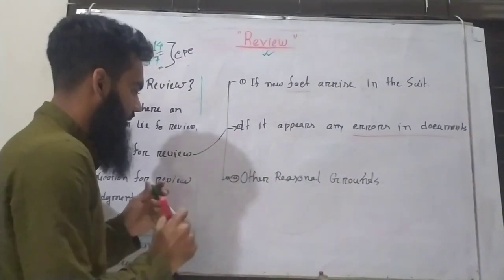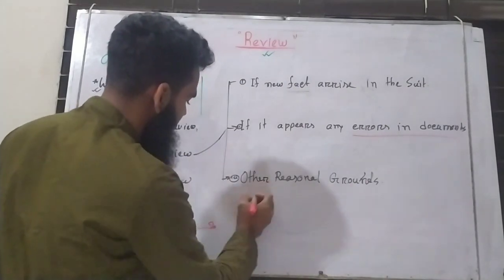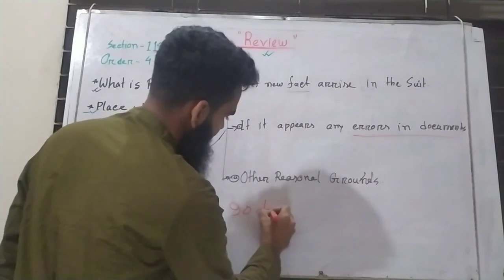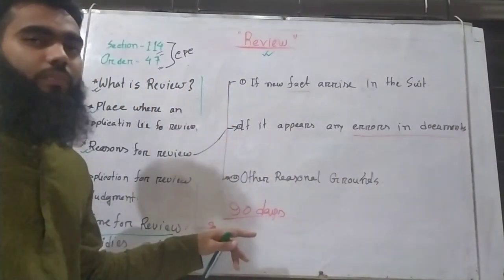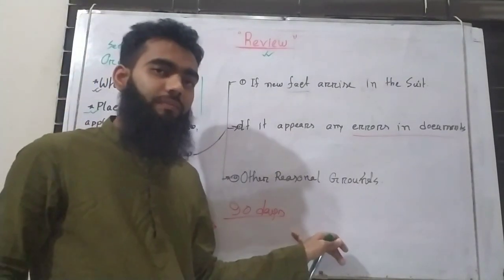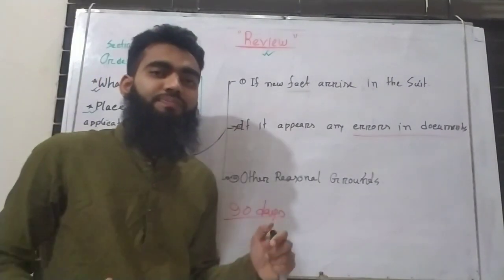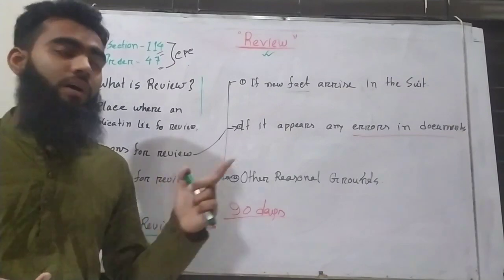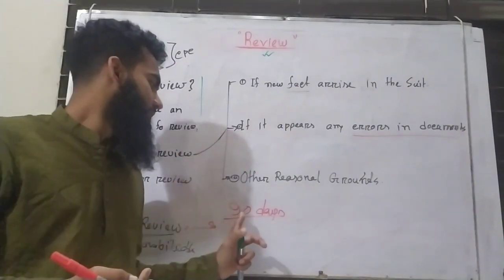Time for review is 90 days. When you have a reasonable ground for review, it is 90 days.